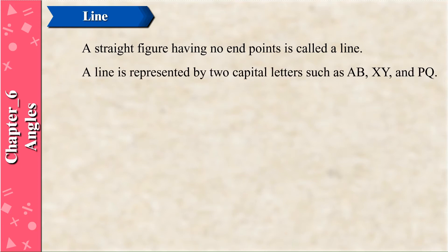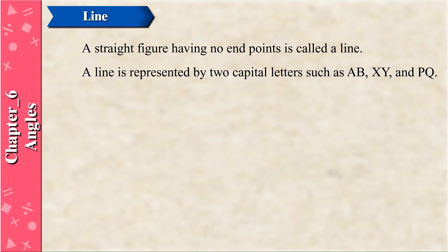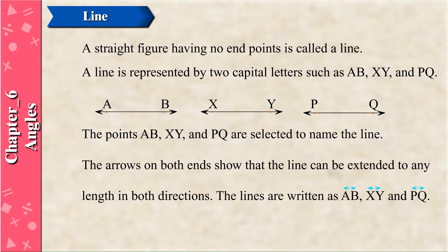A line is represented by two capital letters such as A, B or X, Y or P, Q. The points A, B or X, Y or P, Q are selected to name the line.